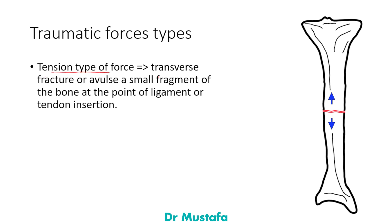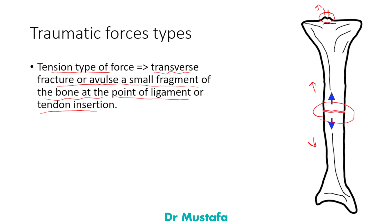A tension type of force produces a transverse fracture, or a small avulsion fragment at the point of ligament or tendon insertion. If the tension force is applied to the tibial bone, we get a transverse fracture. If it is applied at a ligament or tendon insertion site, this leads to an avulsion fracture, where a small bone fragment is pulled away.